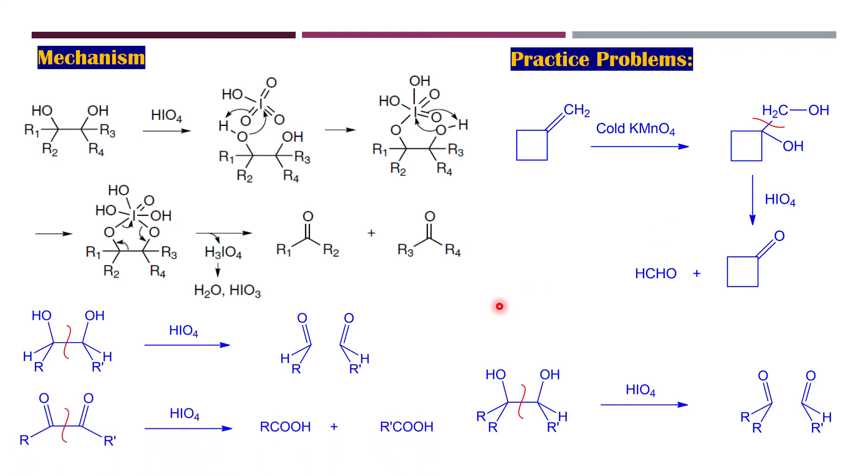Next one, as we can see we have been given 1,2-diol and we have discussed in the previous page that whenever we have been will be given the 1,2-diol then it will be converted to the corresponding carboxylate or carboxylic acid.